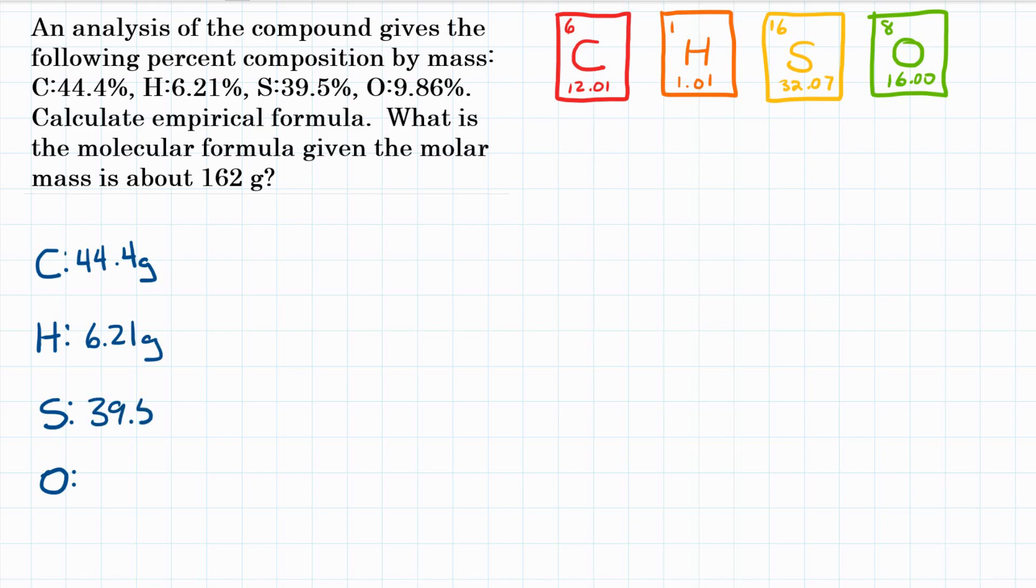sulfur, 39.5 grams, and oxygen, 9.86. So we're just assuming the percentages are also grams, or are also mass.